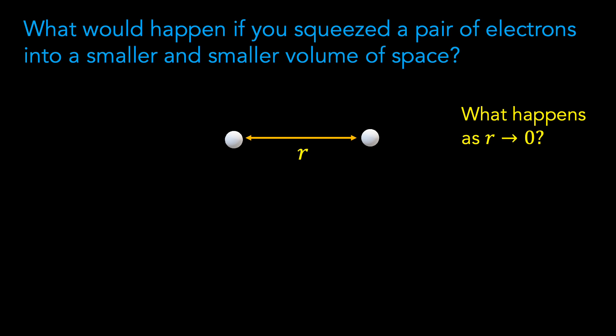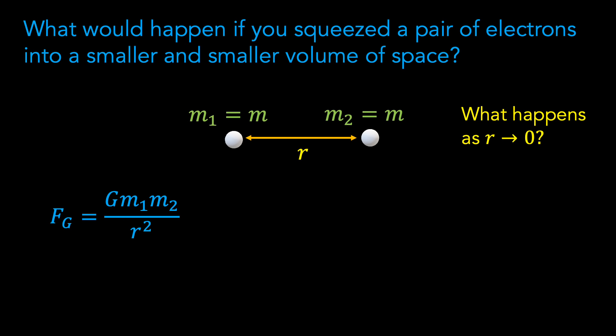We also know that because the two electrons are negatively charged, there will be an electrostatic force of repulsion trying to push them apart. The gravitational force between the two electrons can be calculated using Newton's universal law of gravitation, which simply says that the gravitational force is proportional to the product of the masses and inversely proportional to the square of the distance between them. The constant of proportionality, big G, is known as Newton's gravitational constant. In our example, both m1 and m2 are simply equal to the mass of the electron, which we will call m, and so we can write F equals G m squared over r squared.